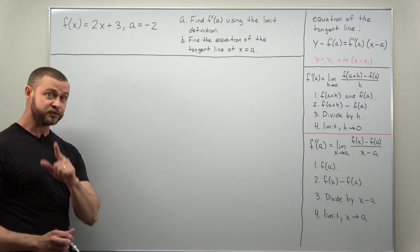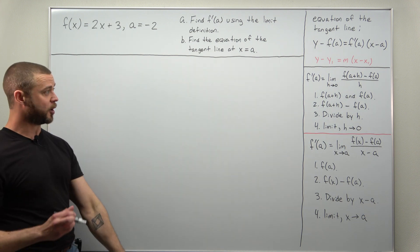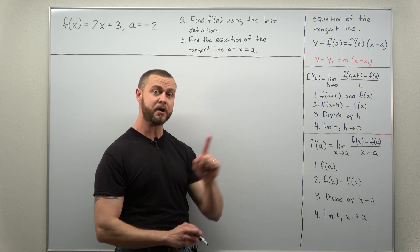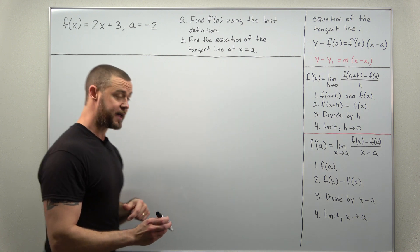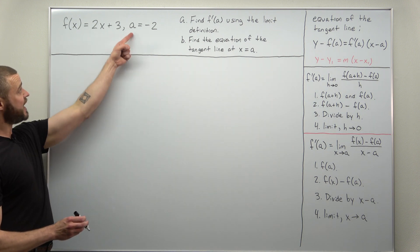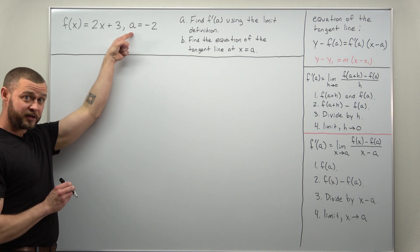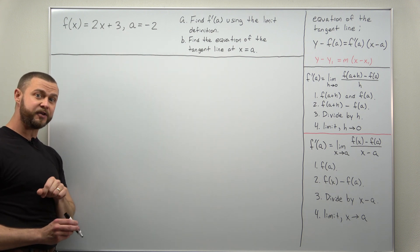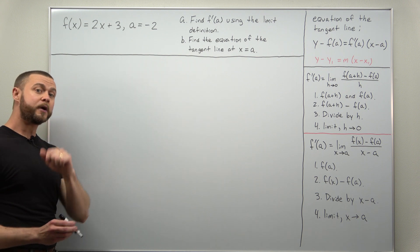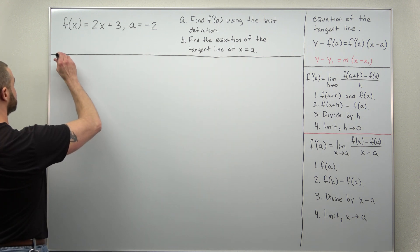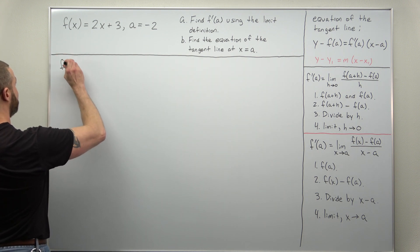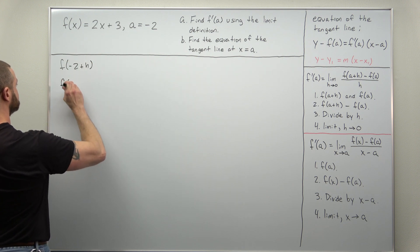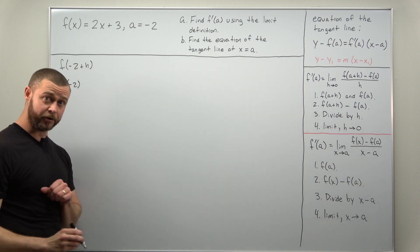Let's go through step one. We're going to take the function and calculate f of A plus H and f of A. We're going to be using A, the x-coordinate at which we're finding the equation of the tangent line. That's going to be A equals negative 2. So in step one, we have two things to calculate: f of negative 2 plus H, and f of negative 2.